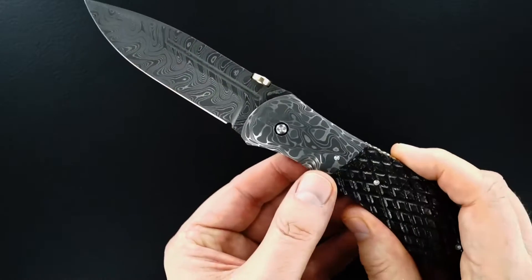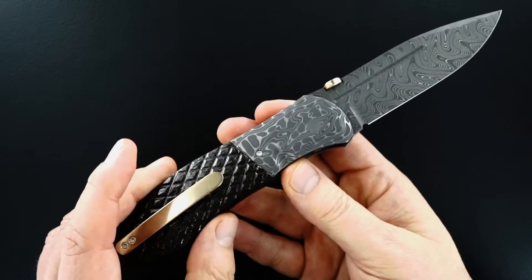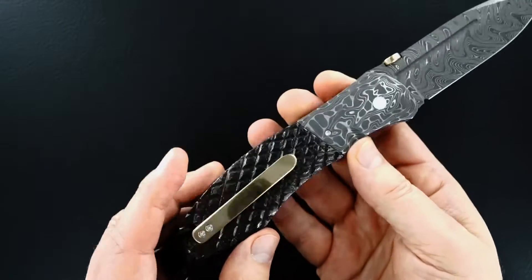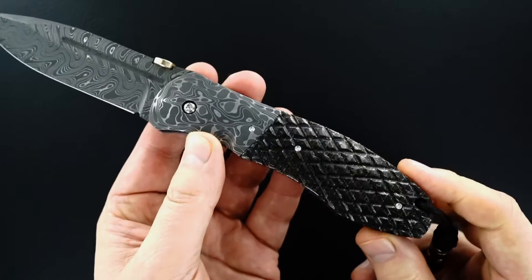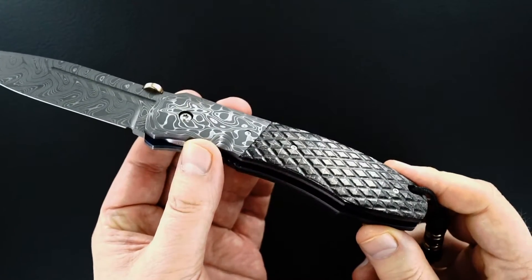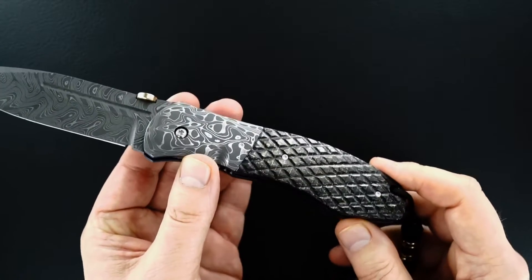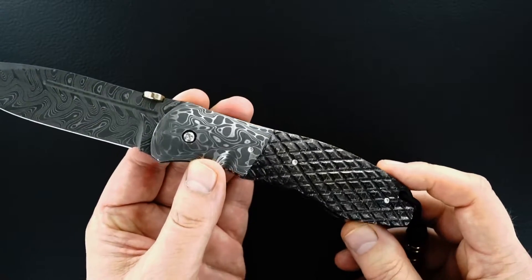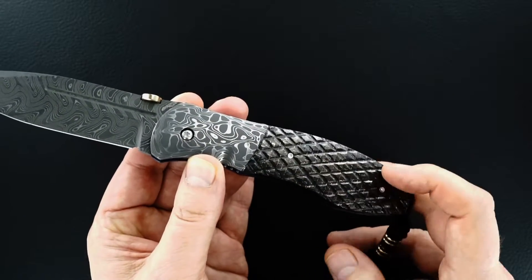Mosaic Damascus bolsters both sides, and these are extraordinary lightning strike carbon fiber hand checkered scales. John doesn't have any CNC equipment, he takes a file and he hand checkers these.